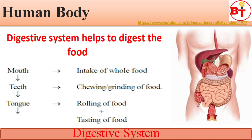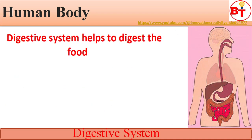The digestive system helps to digest the food — it helps in digestion. This system starts from the mouth, where we take in whole food. Teeth help in chewing and grinding of food. The tongue has taste buds on top which help to taste the food, and the tongue also helps in rolling of food.